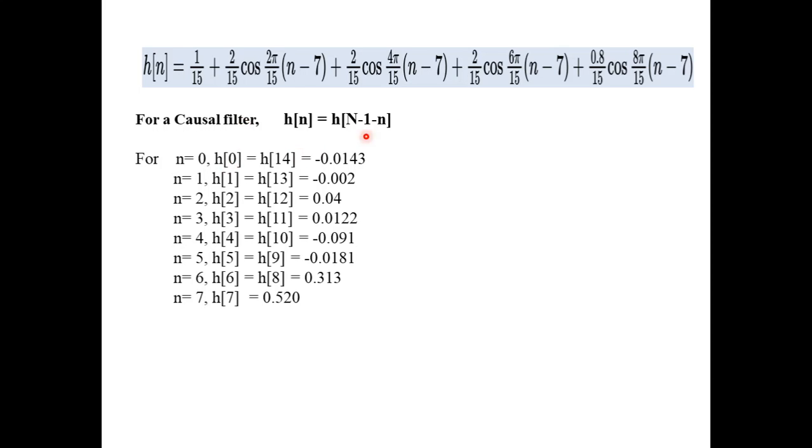h of 0 will be equal to h of 14. Choose the value of π as 180 degrees and not as 3.14 and obtain the values. For h of 7, you will have a separate value since it is symmetrical.